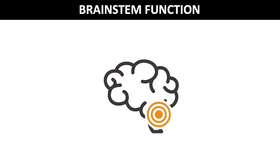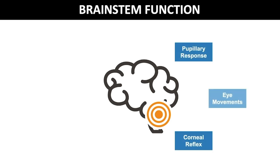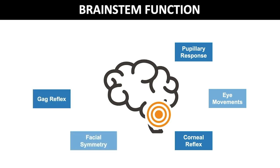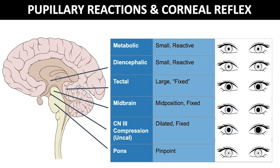Clinicians assess brainstem function by monitoring pupillary responses, eye movements, corneal reflexes, facial symmetry, the gag reflex, and vital signs. Pupillary response and size can assist in determining cause or etiology. For example, opioid overdose leads to small reactive pupils, whereas compression of CN3 leads to a unilaterally dilated pupil.